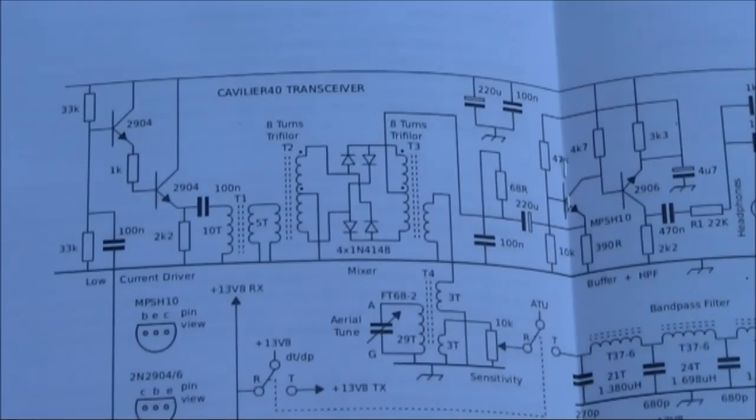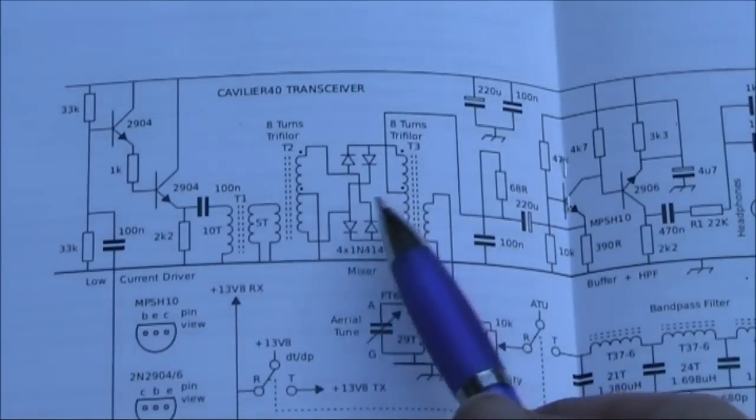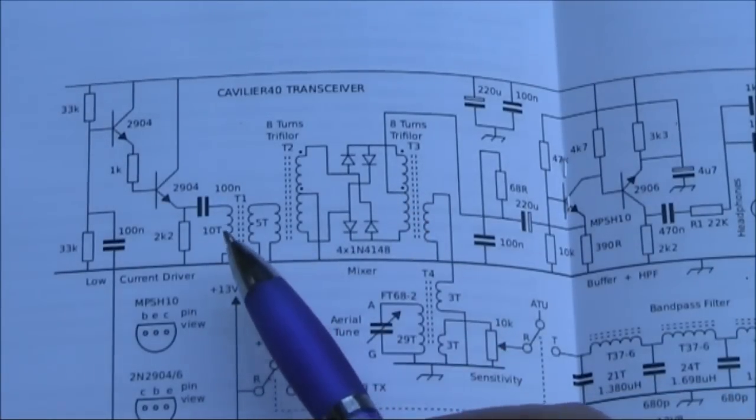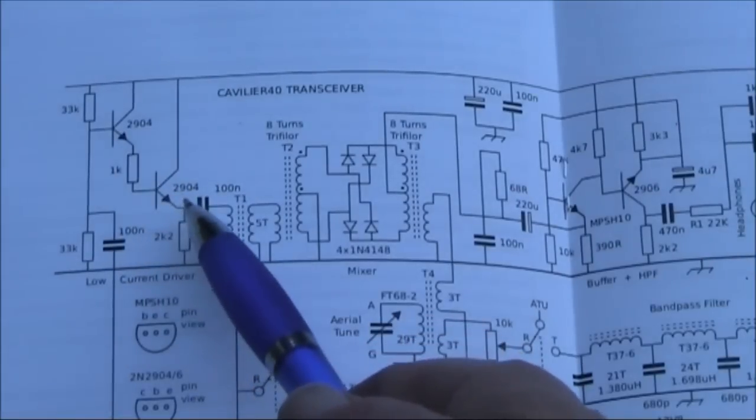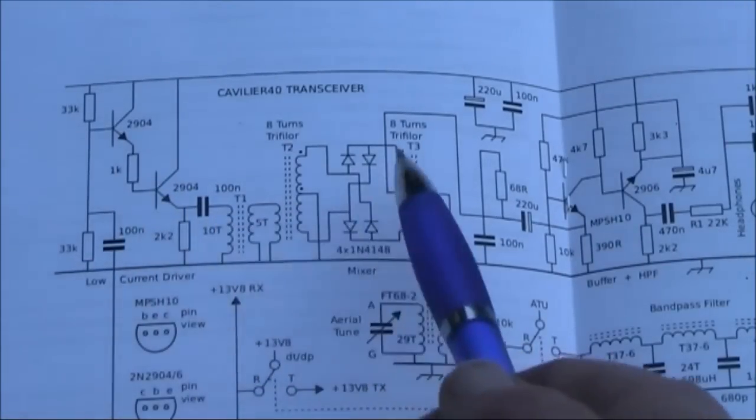Having a look at the receiver, I note there's a diode balance mixer that uses a fair amount of RF drive, and so there's an amplifier stage there to help it, to provide the local oscillator signal.